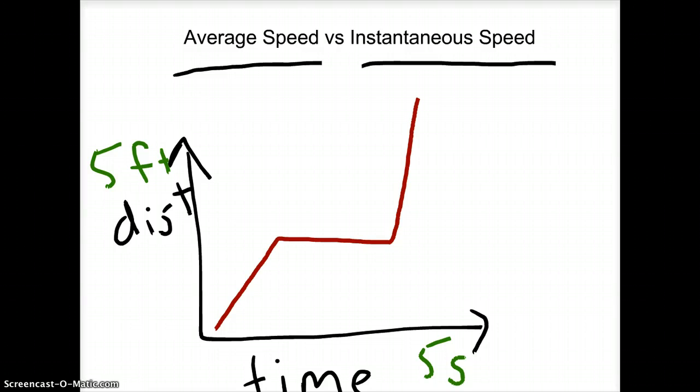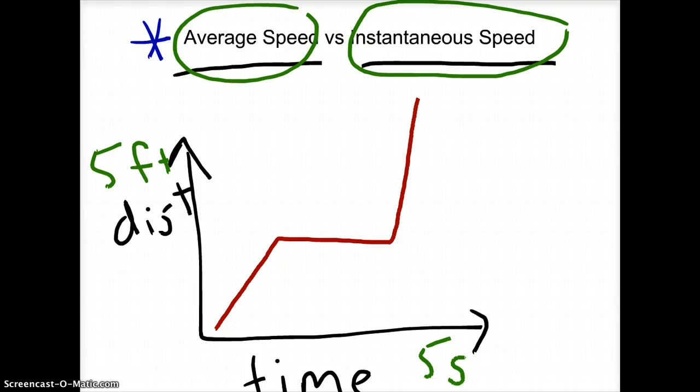Now let's take a look at these two terms: average speed and instantaneous speed. If I were to ask you, what is the average speed of this object? You would probably take the total time, which is 5 seconds, and the total distance, which is 5 feet. You would do distance divided by time, or 5 feet divided by 5 seconds. So in this case, you would know that the average speed is 1 foot per second.